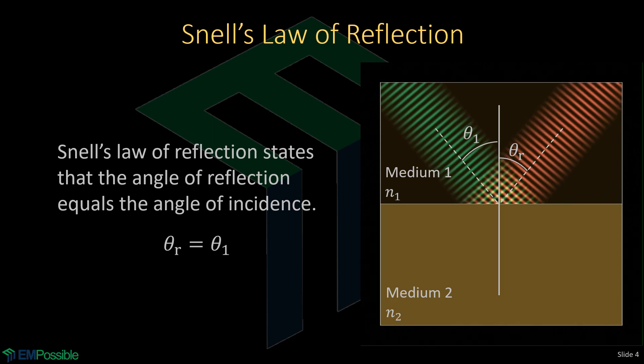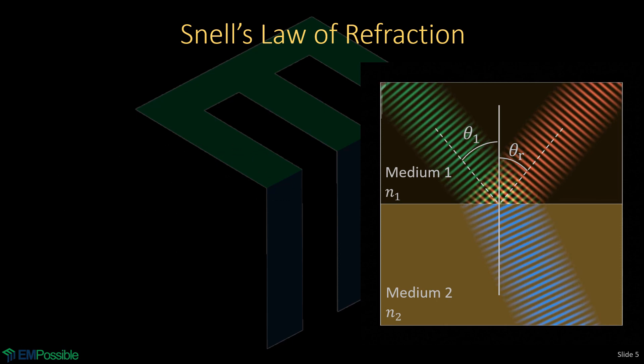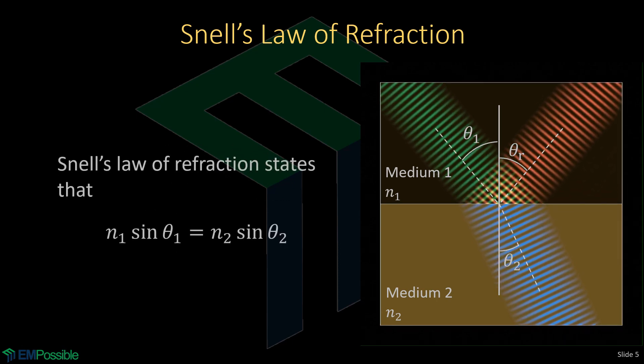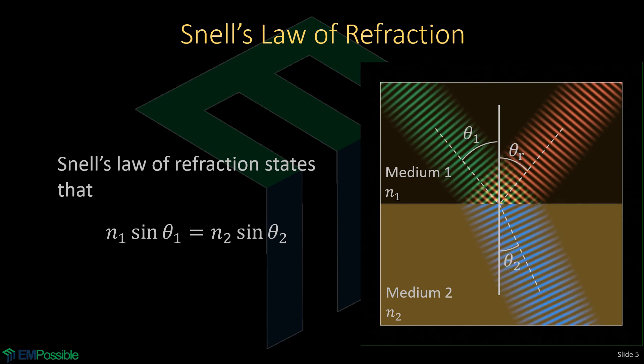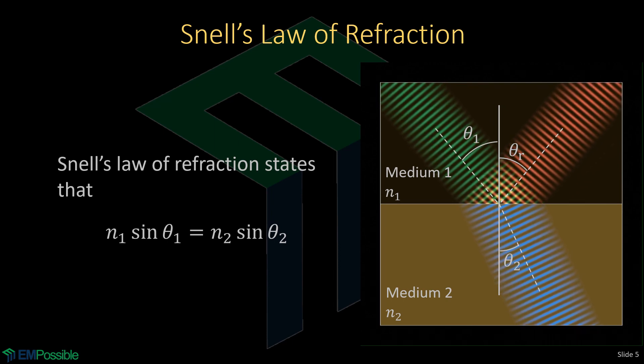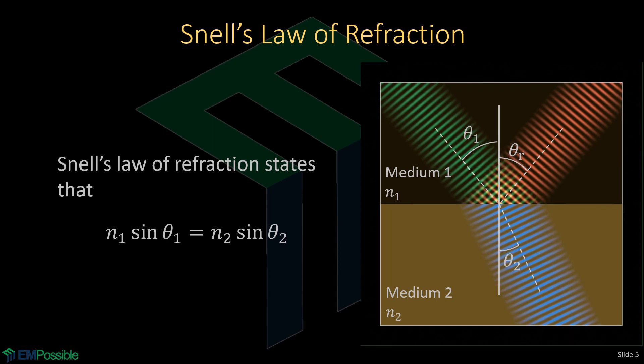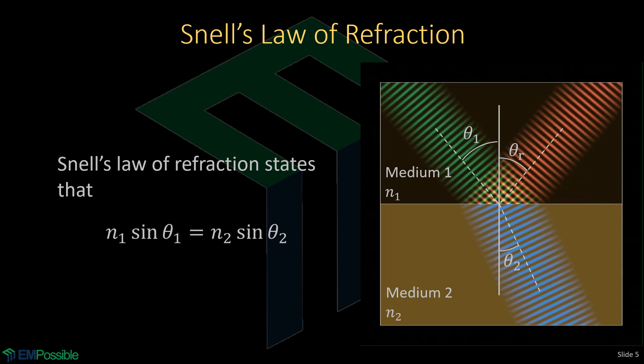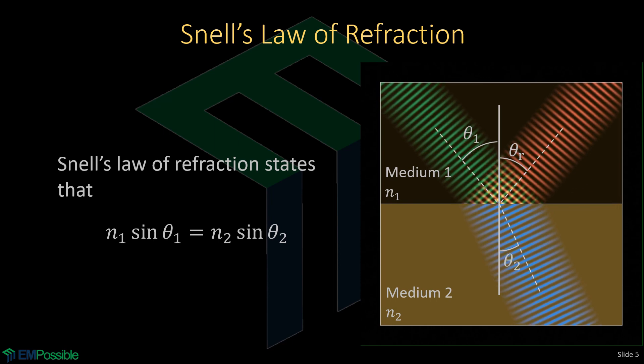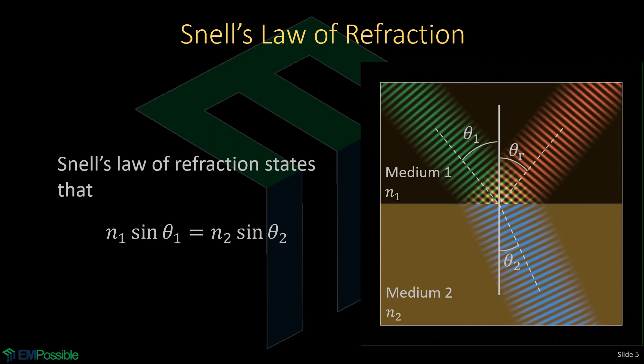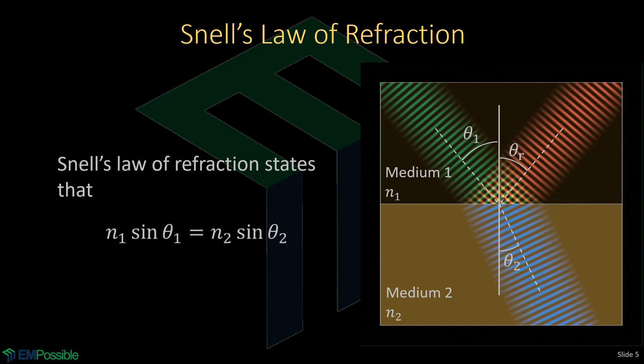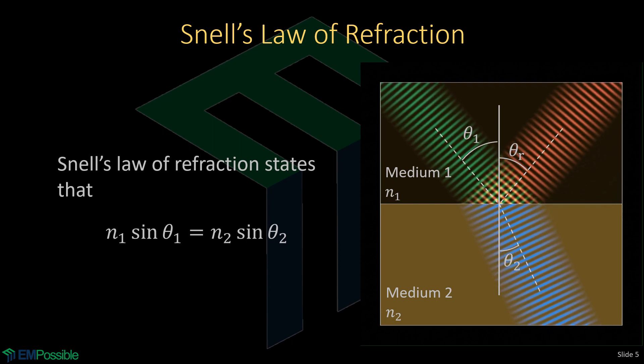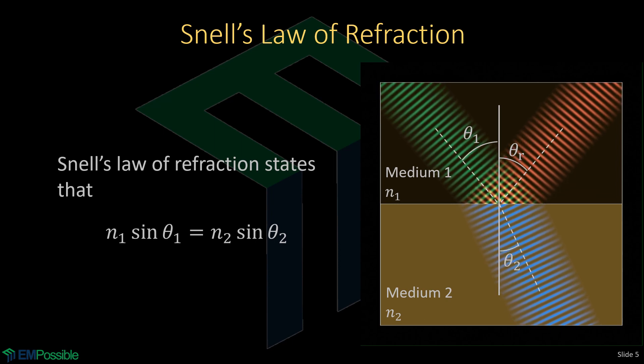The second thing that can happen at that interface is that we have a transmitted beam. And that transmitted beam will be at some angle theta 2, which we can see is a little bit different than theta 1. And it turns out this bends because the waves are traveling at different speeds on either side of the interface. So in order to match the boundary conditions, the wave has to bend. And so Snell's Law of Refraction is the equation that relates the angles and refractive indices.